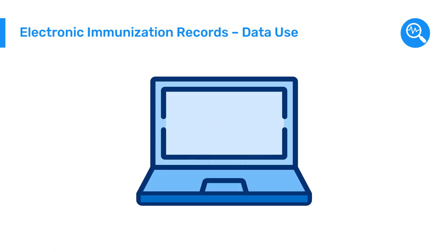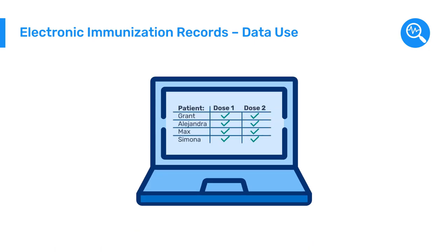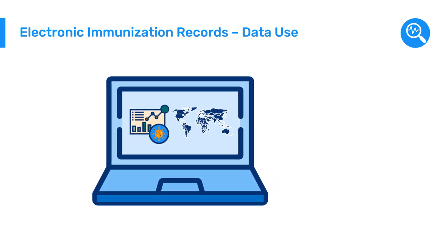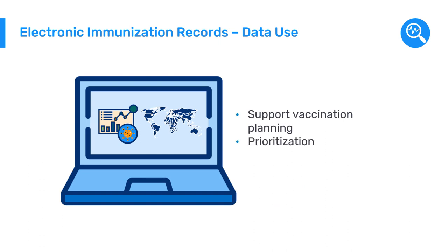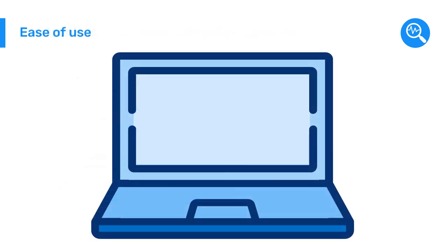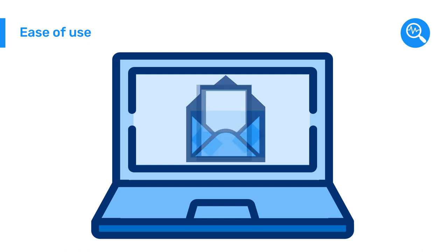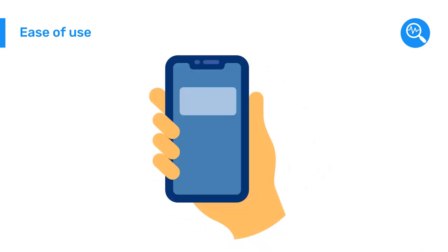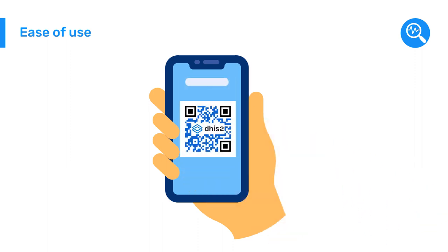Health workers can easily view lists of patients and their status to help with scheduling and follow-up, and all individual patient data can be automatically aggregated in DHIS-2 into dashboards, maps, and charts to provide a high-level overview to support vaccination campaign planning, prioritization, and resource allocation. In addition, many countries customize their DHIS-2 systems to include features for patient self-registration for vaccination appointments, automatic confirmation messages by email or SMS, and the generation of electronic vaccination certificates accessible by QR code.